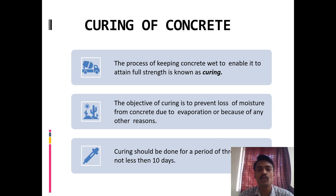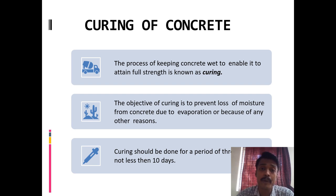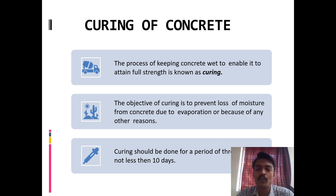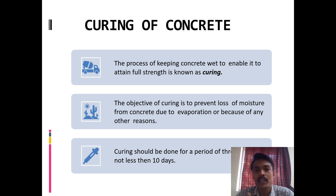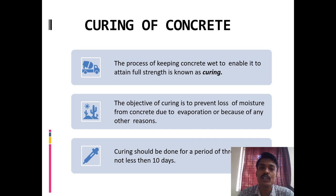Sometimes people use sack bags or gunny bags tied to columns to keep them wet. The most common method is ponding — pouring water on the slab. The objective of curing is to prevent loss of moisture from concrete due to evaporation. During hydration, concrete requires more water; otherwise, early-stage cracking is possible. Don't compromise on curing, as it results in a greater level of shrinkage cracks at the earliest stage.